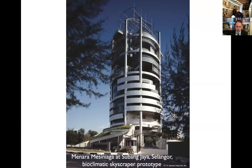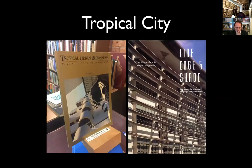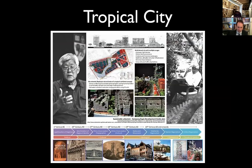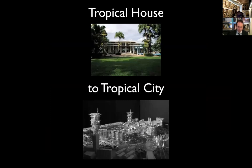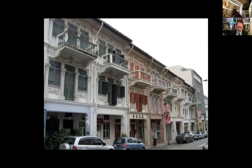The tropical city has to be the real test case. The beginnings were done by people like Ken Yeang — here is one of his early buildings trying to deal with this issue. There's nothing symmetrical about it — there's a rotational aspect you can feel in the design. Ken's approach has largely been about orientation: response to direction of wind, light, and sun. Tay Kheng Soon has been a very strong advocate for the tropical city idea, though he mostly dealt with theory and smaller projects rather than multi-story buildings.